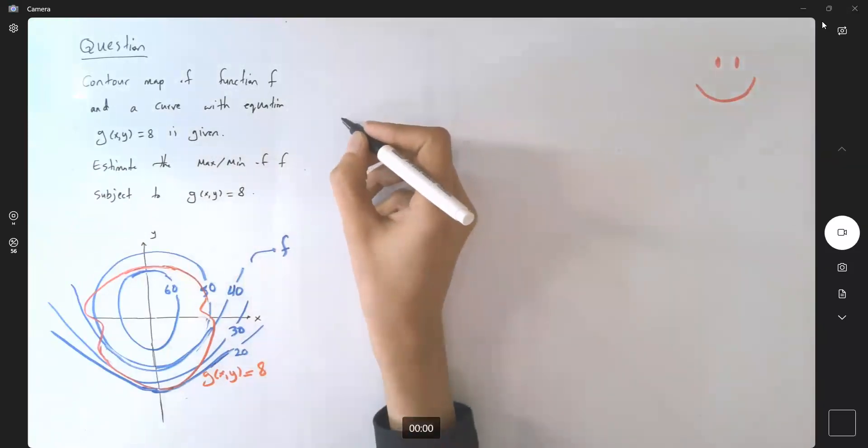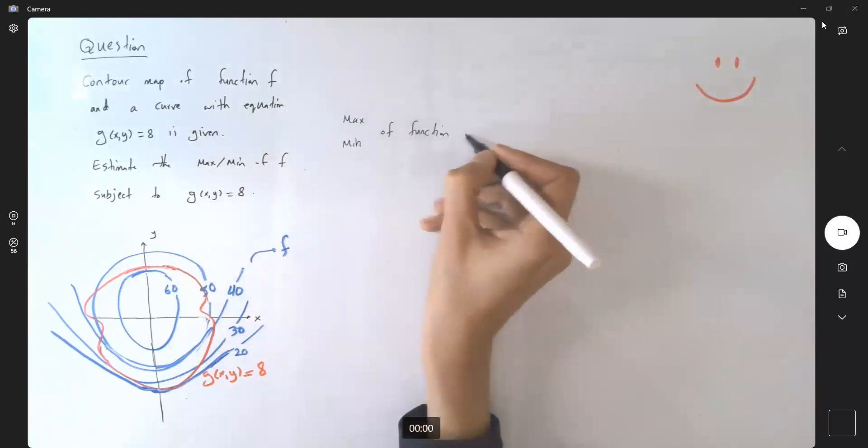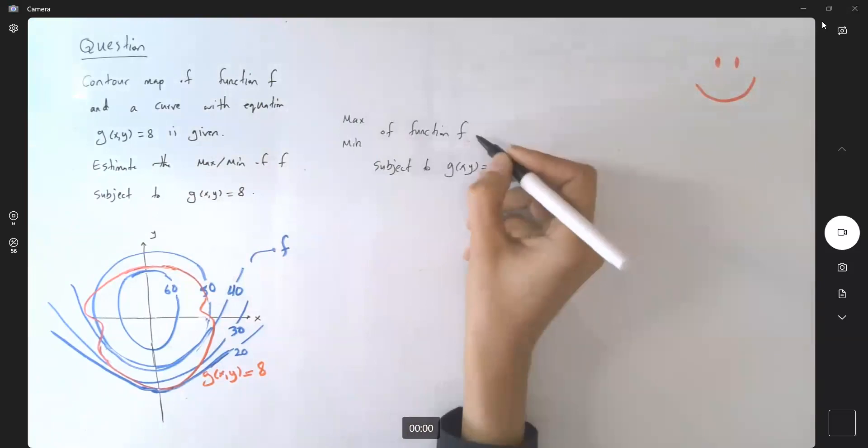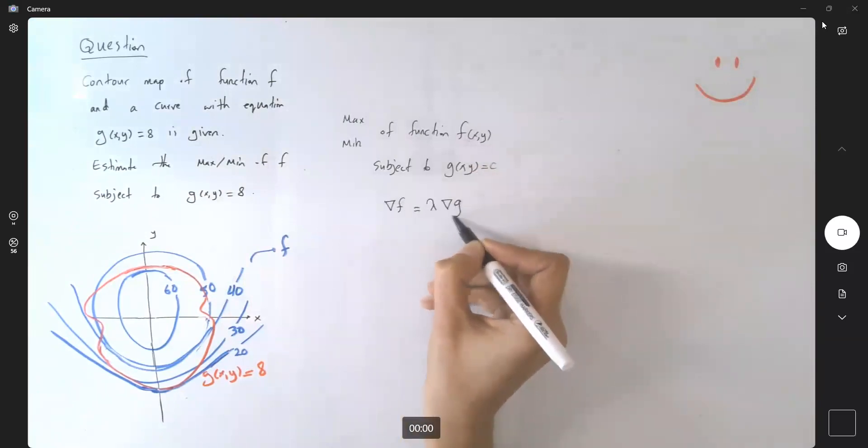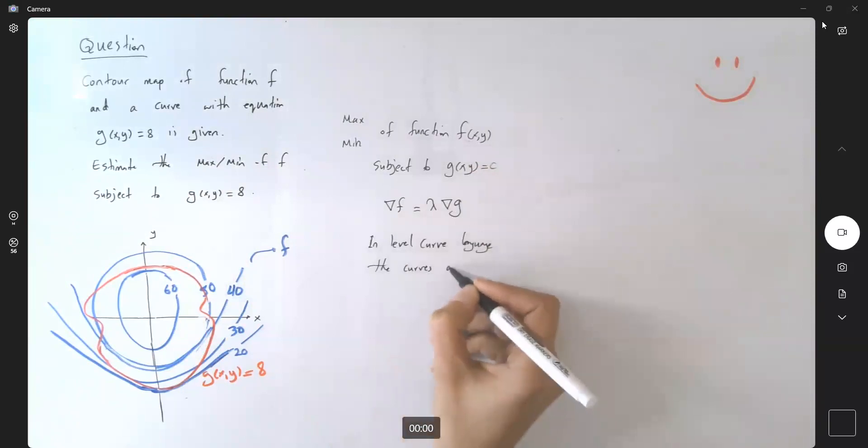Remember that we said that the maximum and minimum of the function f, subject to g of x, y equals to c, it actually happens that the gradient of f is parallel to gradient of g. Or when you're looking at the level curves in level curve language, the curves are tangent to each other.